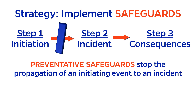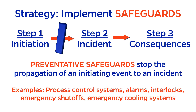A preventative safeguard stops the propagation of an initiating event into an incident. Examples include process control systems, alarms, interlocks, emergency shutoffs, or emergency cooling systems.